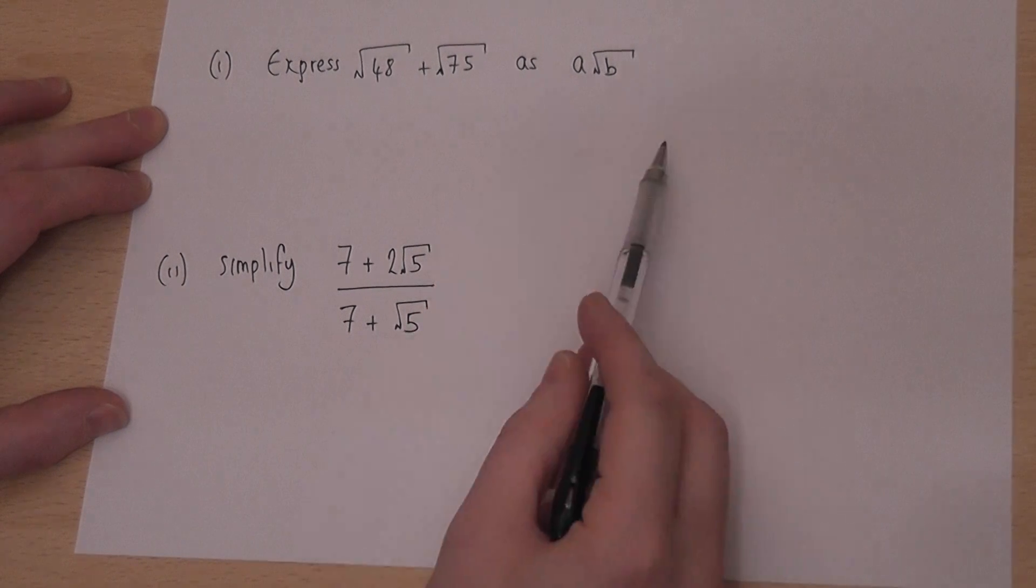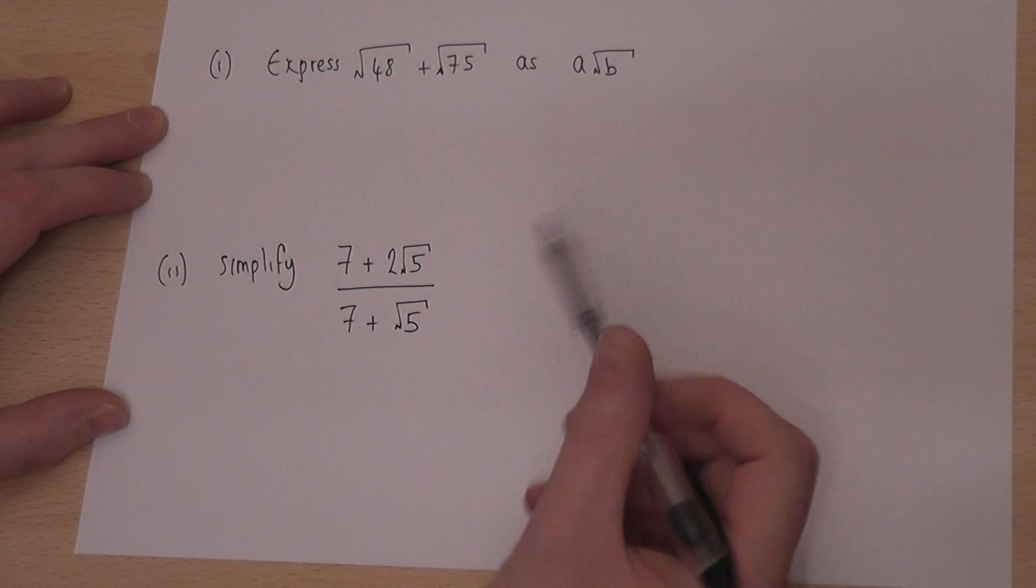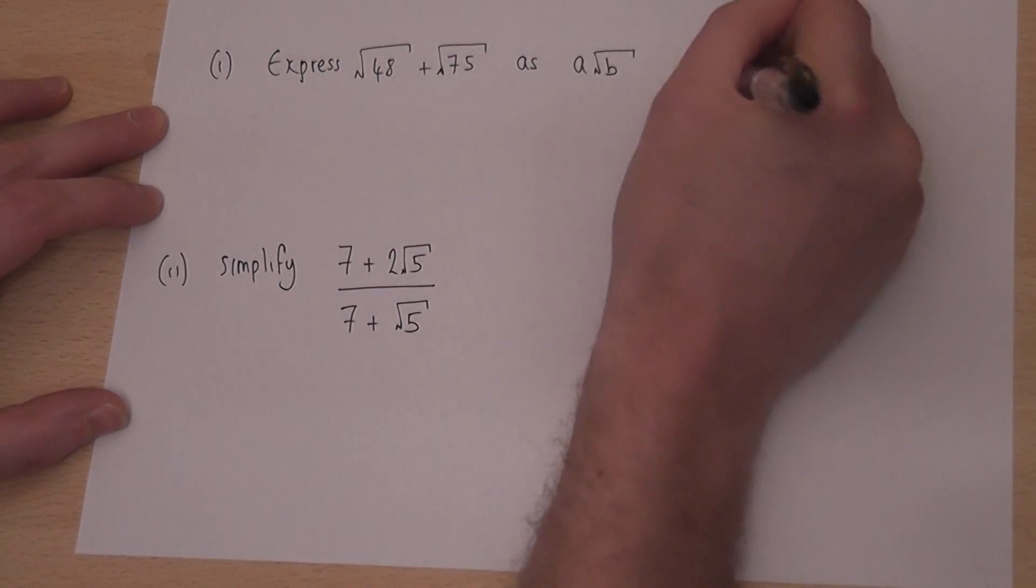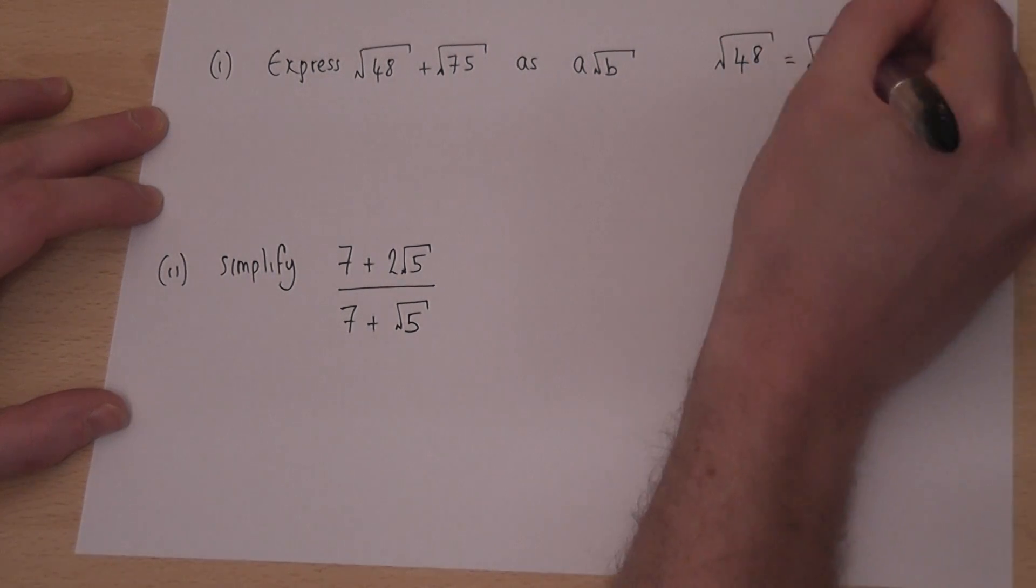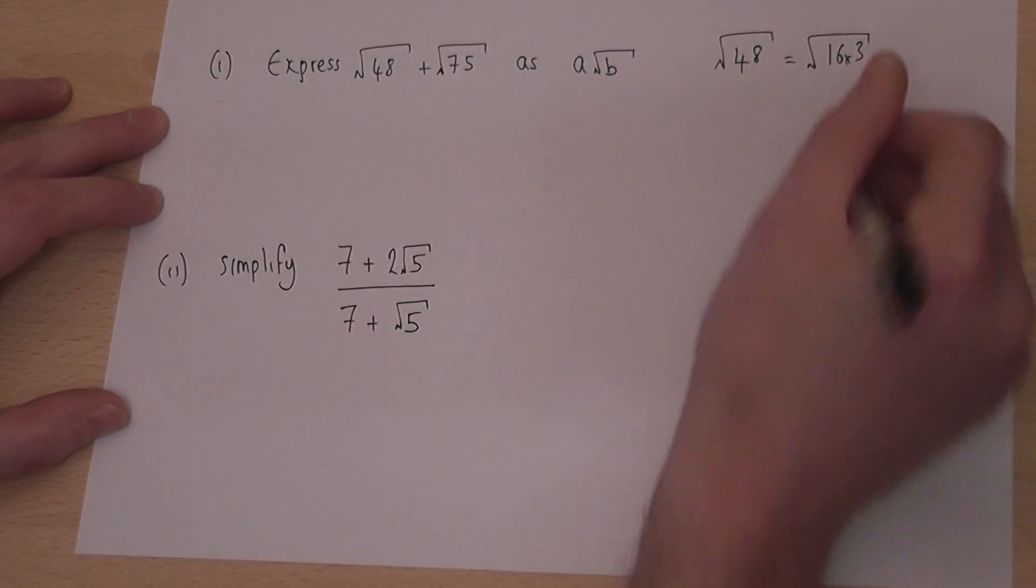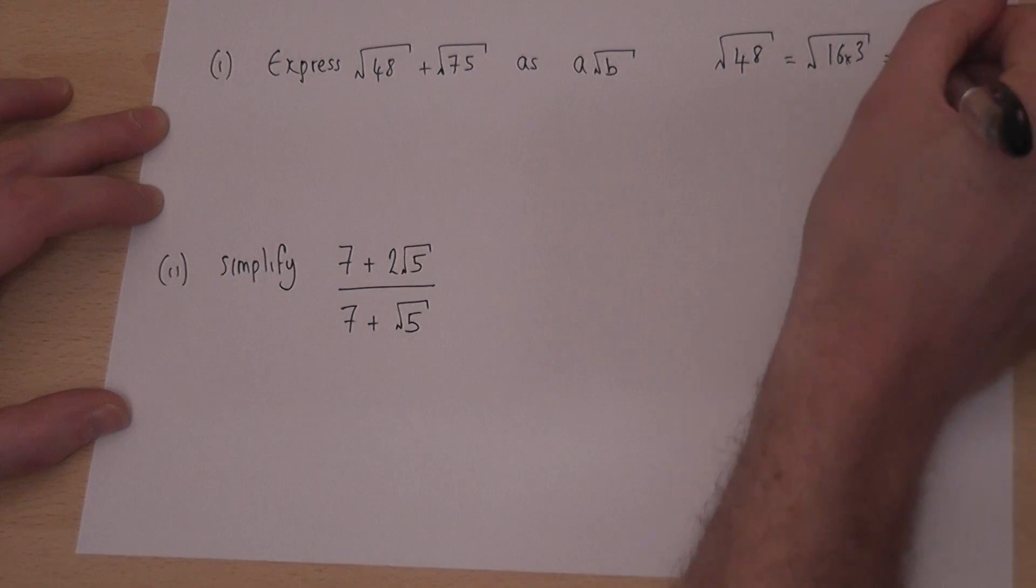Now the method here is to first simplify the surds. So root 48, I look for the square factor of 48 which is 16, so it's 16 times 3, and root of 16 is 4, so it's 4 root 3.